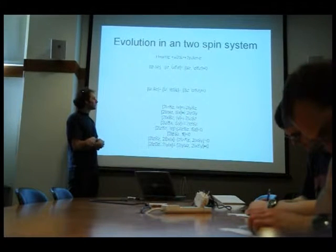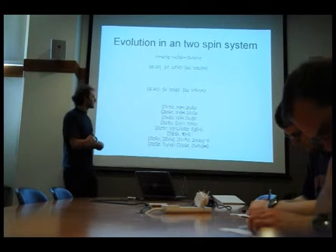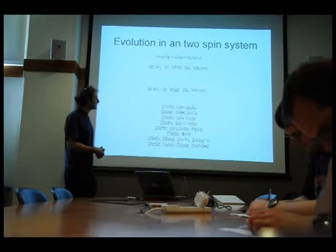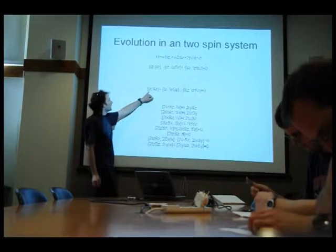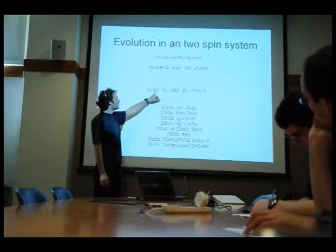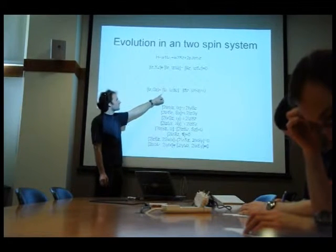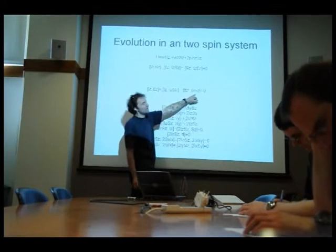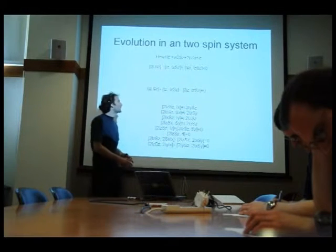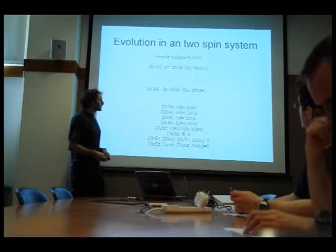So important commutation relationships, basically, I try to summarize here. Things like these all commute, so IC and SC commute, always when they're along the same axis, basically, commute.